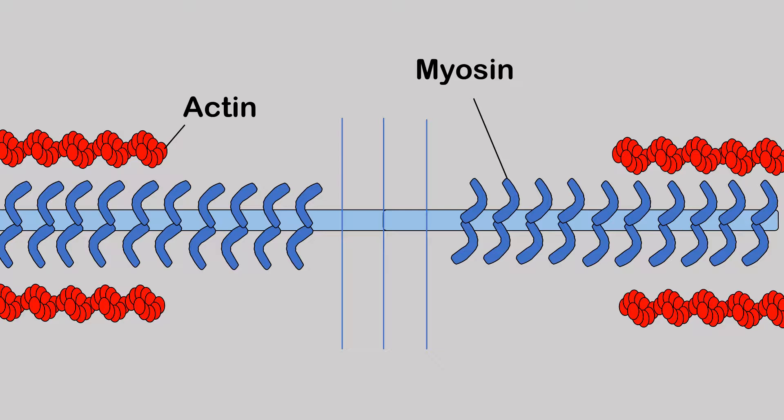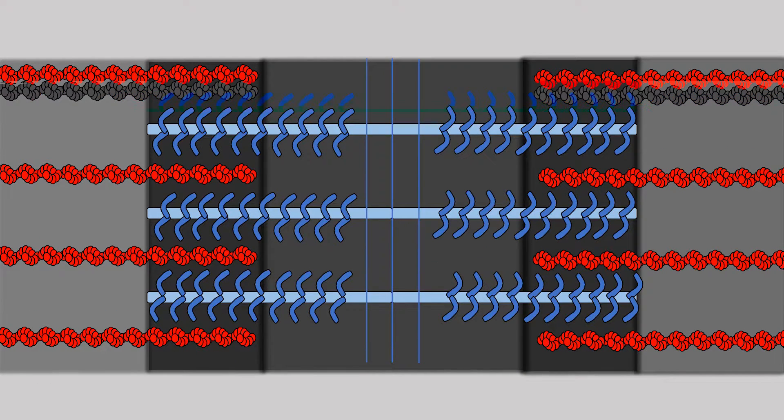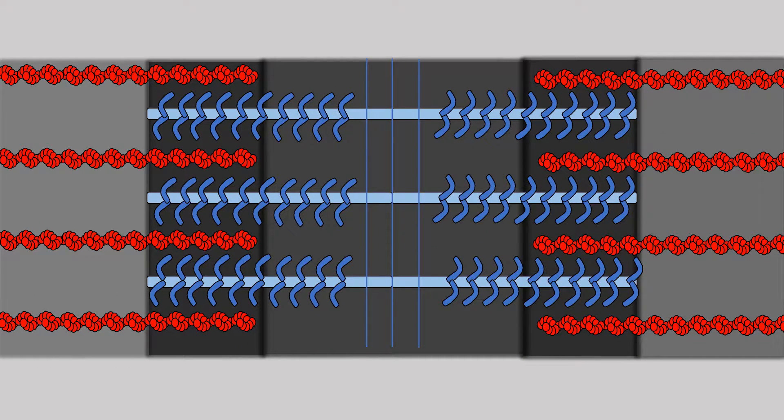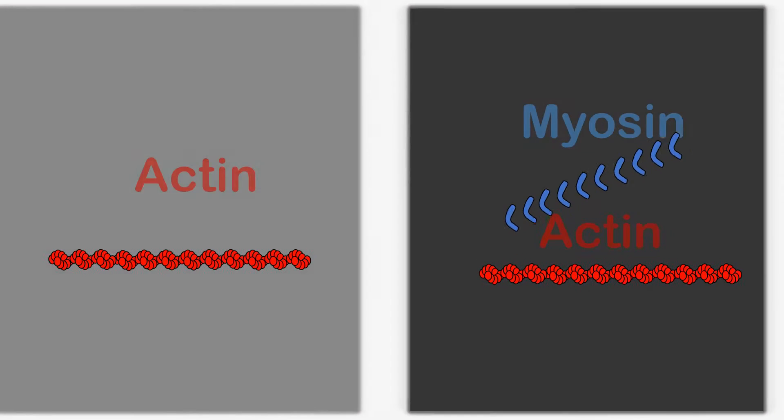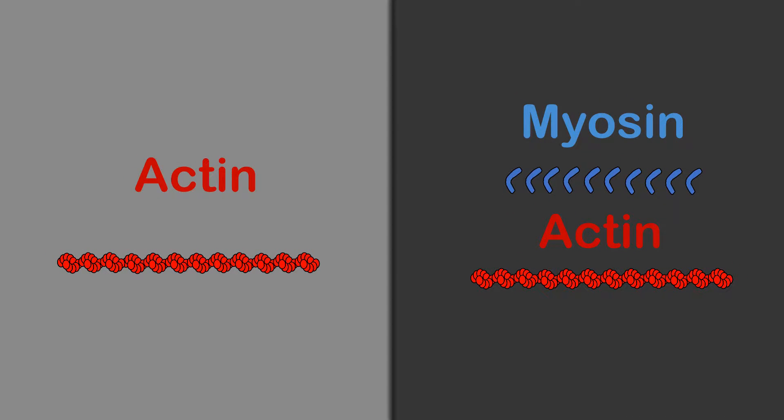So a lot of textbooks will talk about light and dark zones within the sarcomere, and this simply is referring to where the actin and myosin overlap or not. When the actin is by itself, we normally refer to this as the light zone, and where actin and myosin overlap, this is called the dark zone.